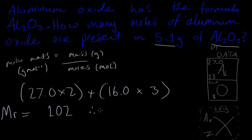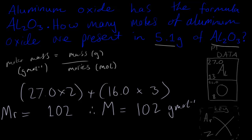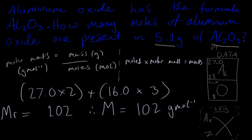Because molar mass is the same as relative formula mass but with units, the molar mass M equals 102 grams per mole. Now we have the molar mass and we have the mass. If we rearrange the equation to get moles on one side, we first multiply both sides by moles, giving us: moles times molar mass equals mass.